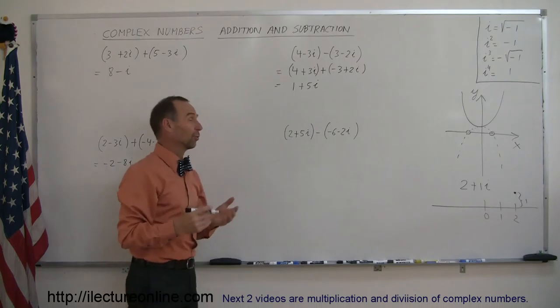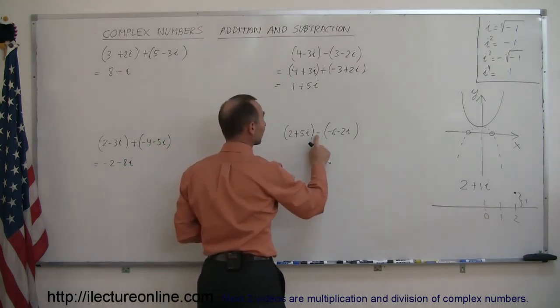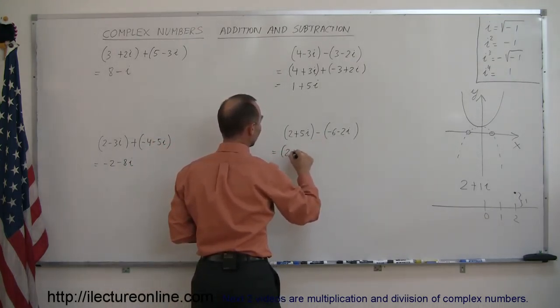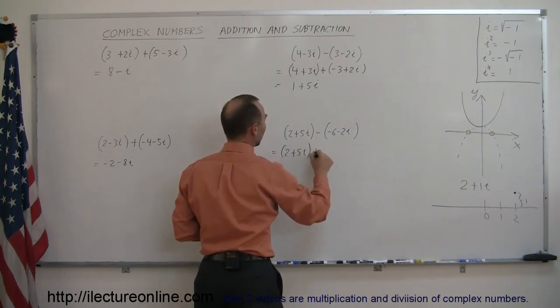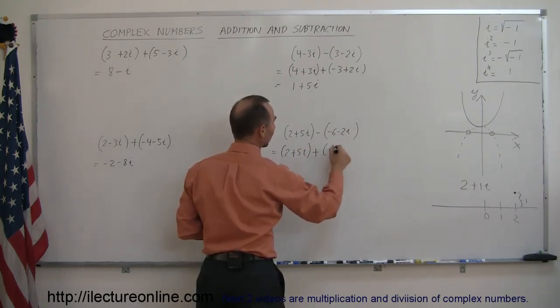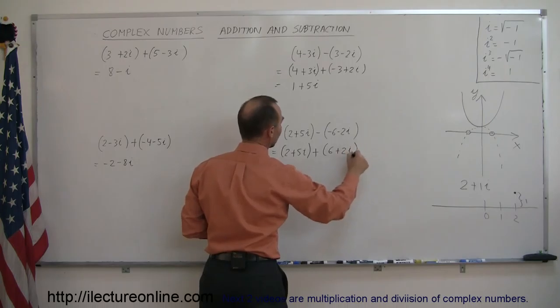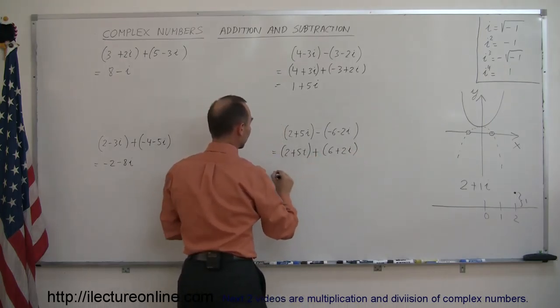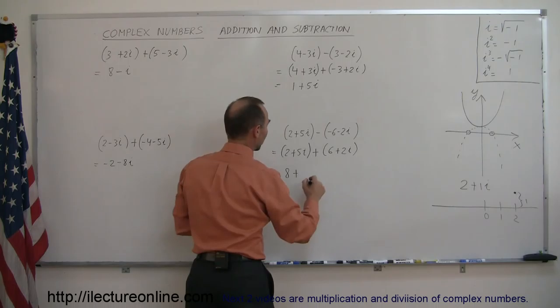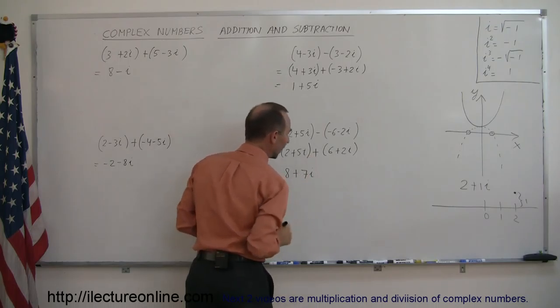Here again, the easiest way is to apply the negative sign to everything inside. Write this as 2 plus 5i plus, and then change all the signs inside to get 6 plus 2i. Then all you have to do is add the real parts together, which equals 8, and add the imaginary parts together, which is 7i.